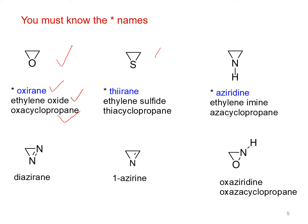Similarly, for thiocyclopropane, the Hantzsch-Widman name, the traditional name, and the IUPAC name are all shown. Some compounds are known by their Hantzsch-Widman name, some by their traditional name, and some by their IUPAC name. Many compounds can be named under all three systems.